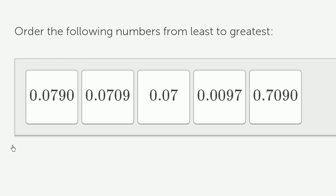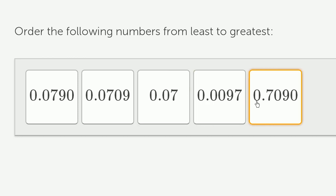None of these numbers have any value to the left of the decimal point — they all have 0 ones. So let's go to the next decimal place to the right. I'm starting with the largest decimal places and going to successively smaller ones. So I'll go to the tenths place.